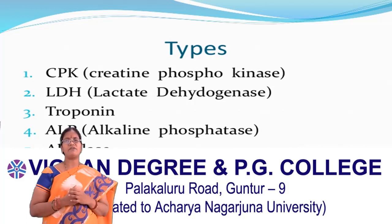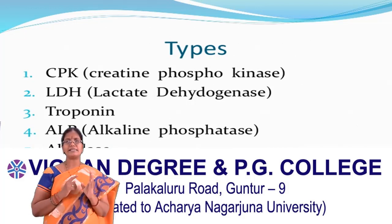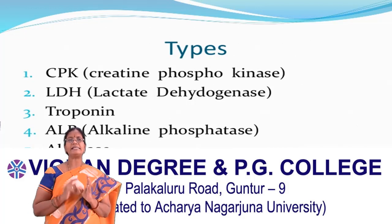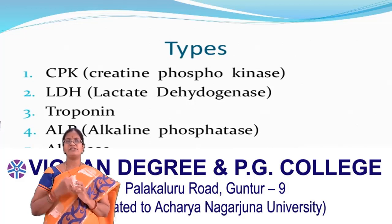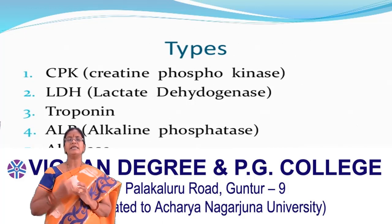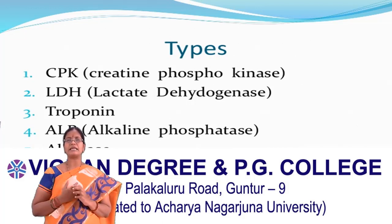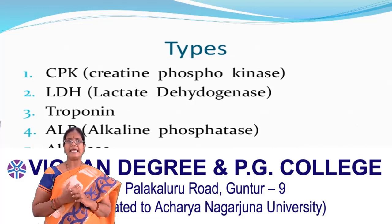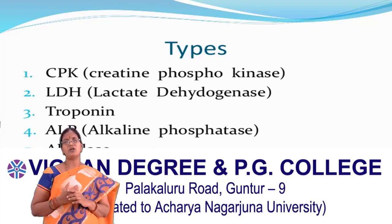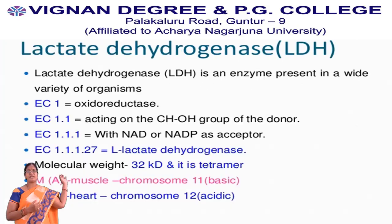So what are the five types? The isoenzymes are: first, CPK (creatine phosphokinase); second, lactate dehydrogenase (LDH); third, pyruvate kinase; fourth, alkaline phosphatase (ALP); and fifth, aldolase. Now we will see lactate dehydrogenase.